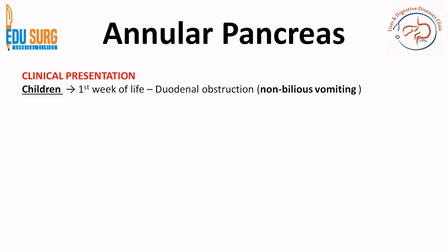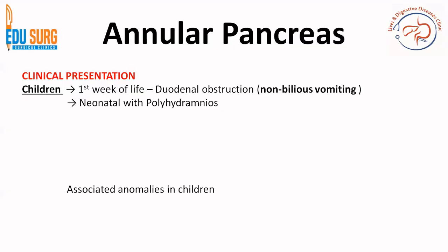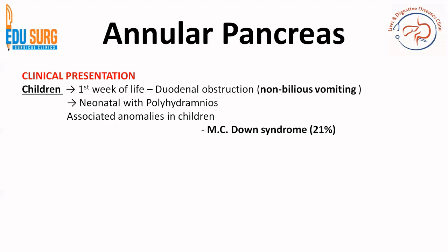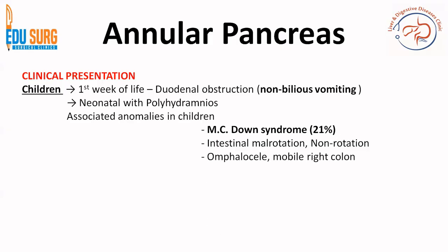Clinically, annular pancreas can present in the first week of life as duodenal obstruction with non-bilious vomiting, since the block is above the ampulla. It can also present prenatally with polyhydramnios. Associated anomalies include Down syndrome in 21% of cases, intestinal malrotation and non-rotation, omphalocele, mobile right colon, situs inversus, duodenal atresia, and Tetralogy of Fallot. Because of these associations, it is important to assess the entire patient for additional congenital abnormalities.